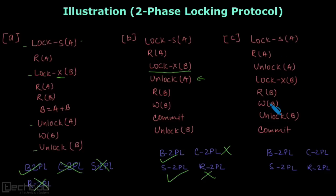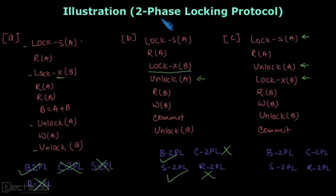Now for transaction C: basic 2PL — no, it is not basic. We can see there is a lock, then an unlock, then again a lock. There is no clear phase separation. It's locking, unlocking, locking, unlocking. The meaning of two-phase locking is that we have two strict phases: in the growing phase, no unlocking occurs, and once unlocking starts, no new lock can be acquired. But here, after unlocking starts, it acquires a new exclusive lock, violating the condition.